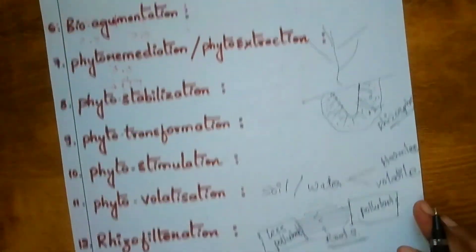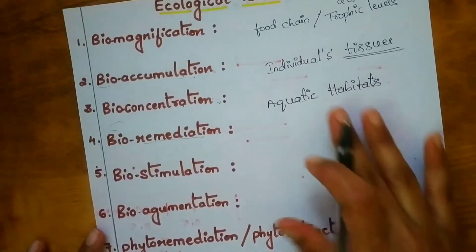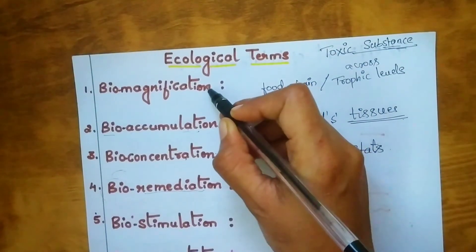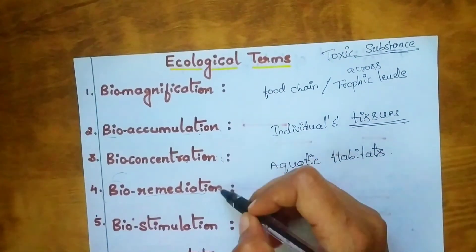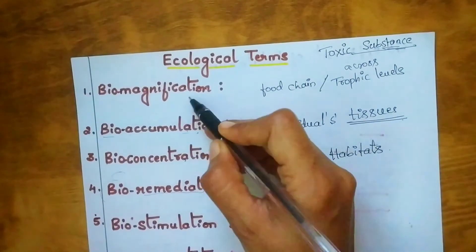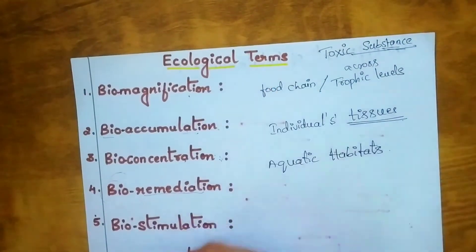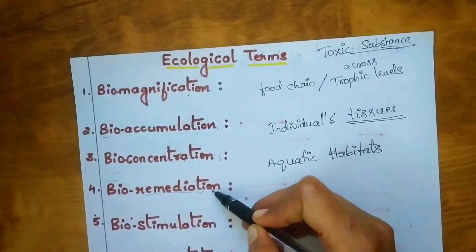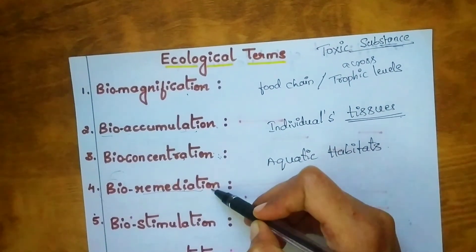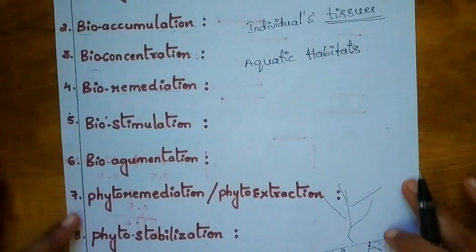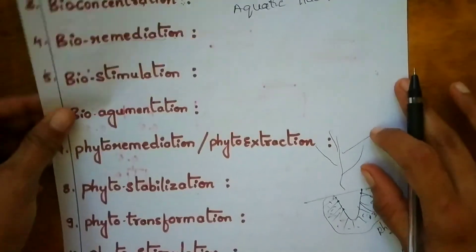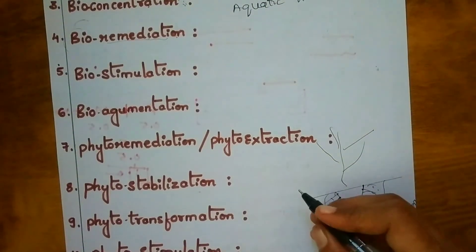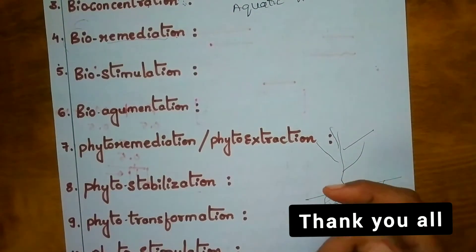Now let us look at which terms have been repeatedly asked in the examination. Biomagnification is the most repeatedly asked term. Bioaccumulation, bioconcentration, and bioremediation are also repeated frequently in the examination. I hope this video was helpful. If you liked it, please share, subscribe, and give it a thumbs up. Thank you everyone.